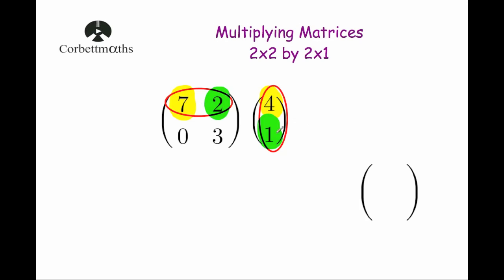So we're going to multiply the first row by the column — we're going to do the 7 times the 4, and then the 2 by the 1, and then we'll add them together. That's how you multiply a row by a column: you multiply the number on the left by the number on the top, and the number on the right by the number beneath it. So we're going to do 7 times 4, which is 28, and then 2 times 1, which is 2, and we add those together, so that's equal to 30.